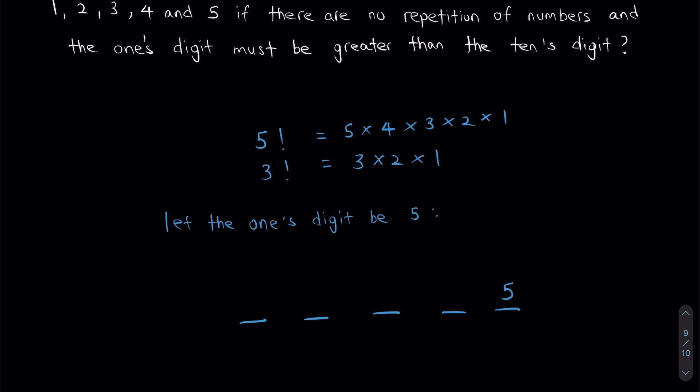is how many different numbers can I put over here? The answer is four options, because any number I place there will be smaller than five and it will fulfill the criteria of the question. So I have three